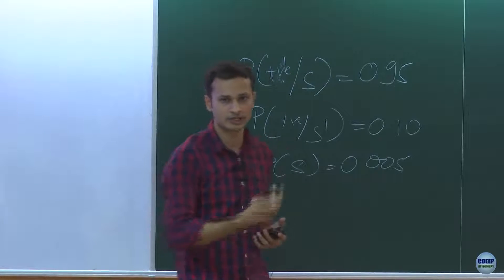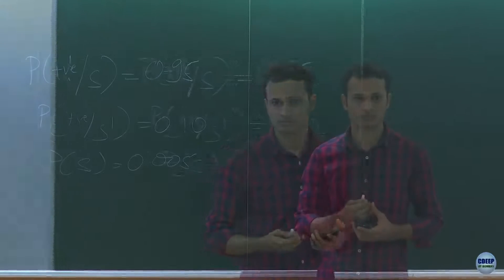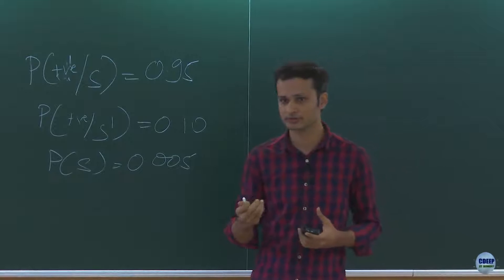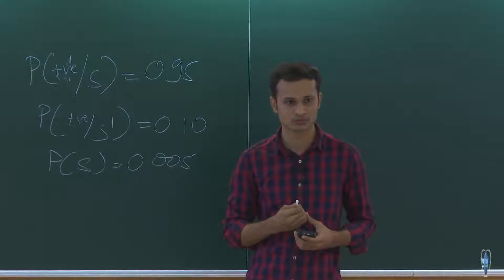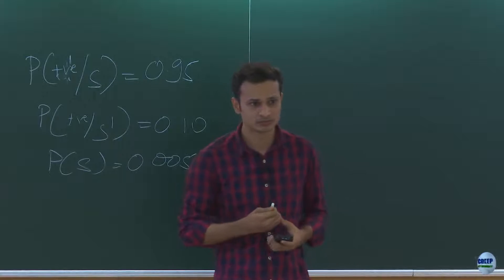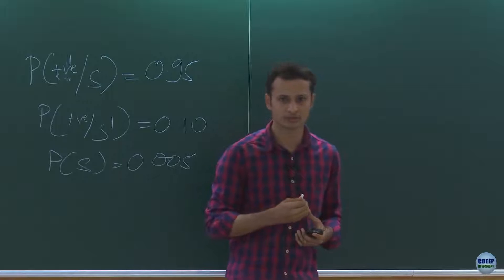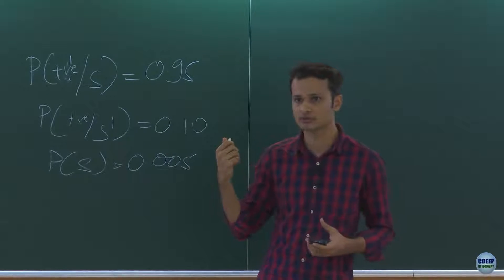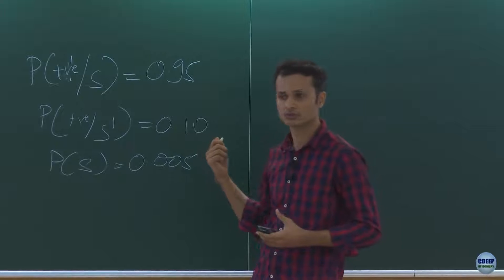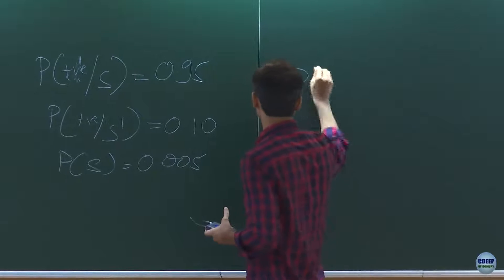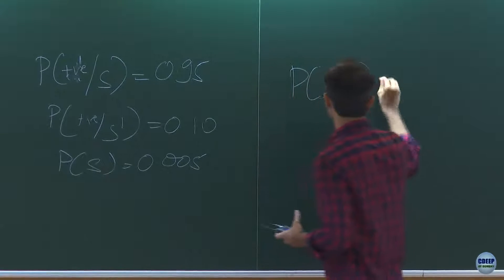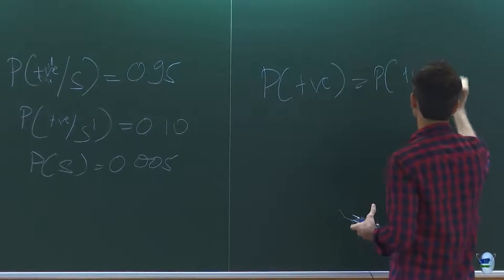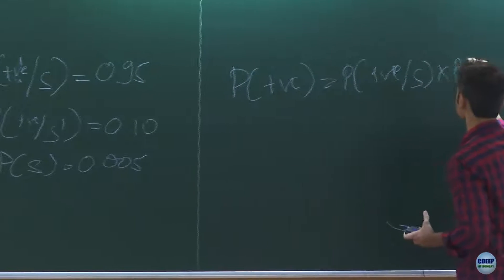Probability it is a non-sufferer and it gives a positive result is 0.10, and probability of suffering from the disease is 0.005. We just have to compute probability of positive equals probability of positive given non-sufferer times probability of non-sufferer, plus probability of positive given sufferer times probability of sufferer.